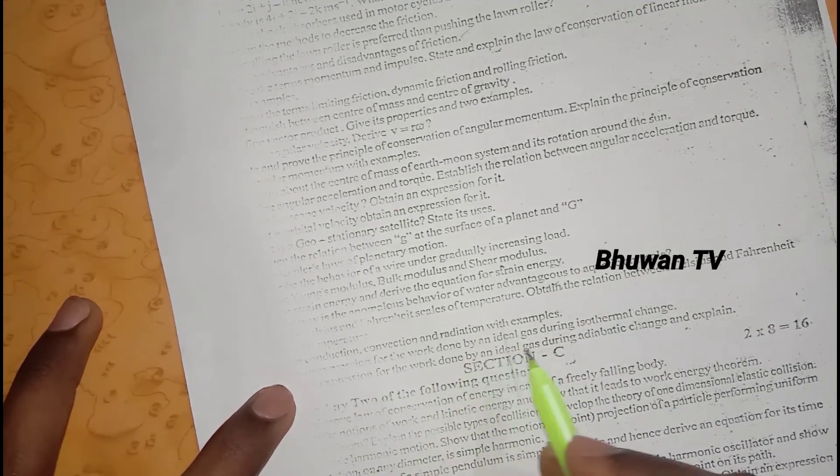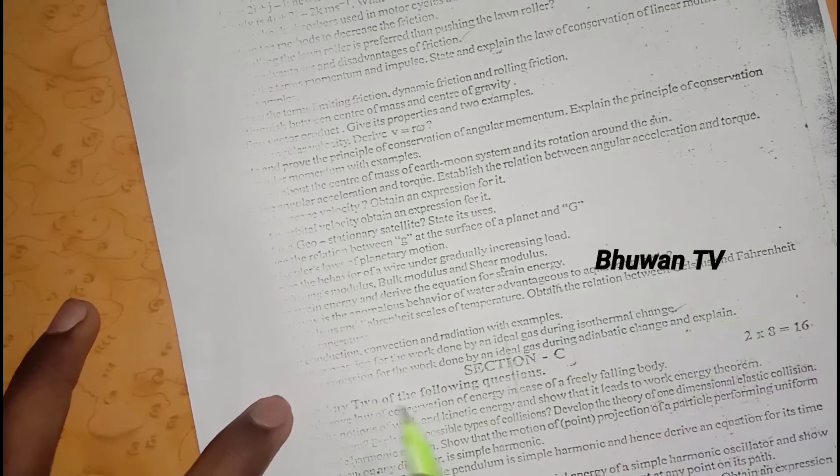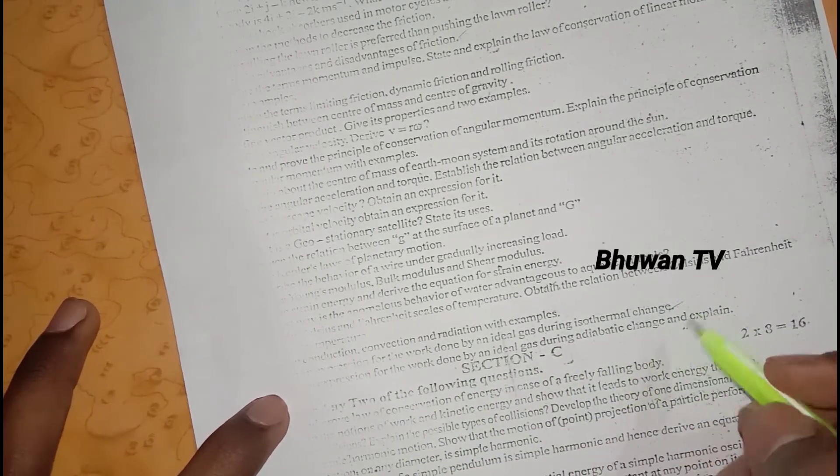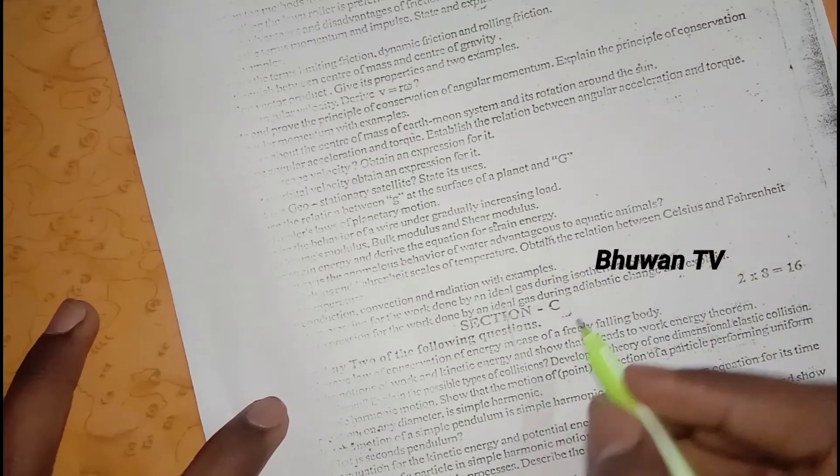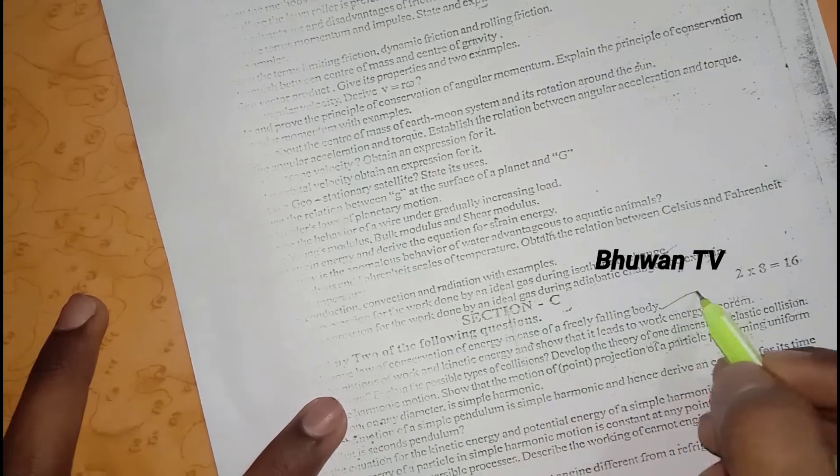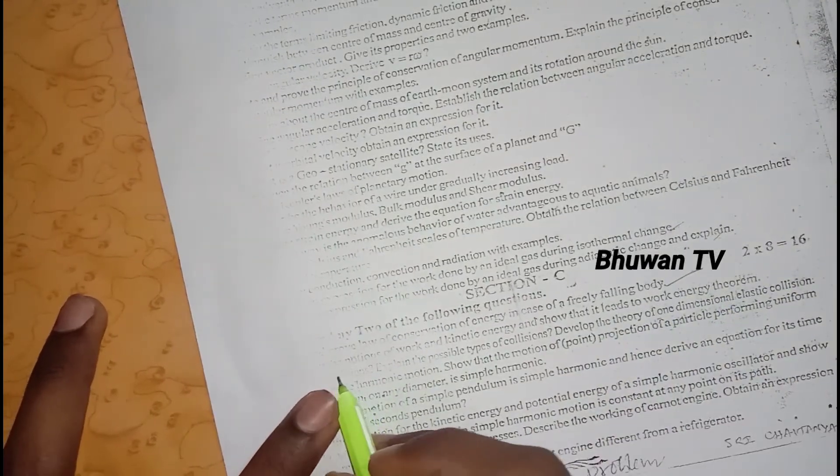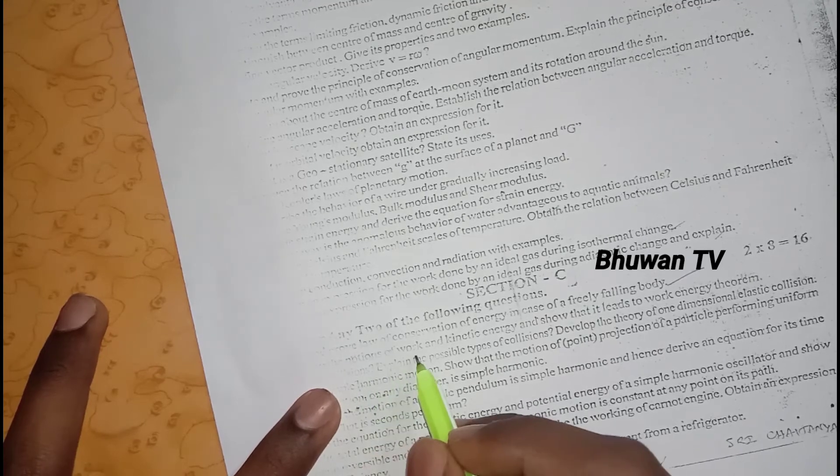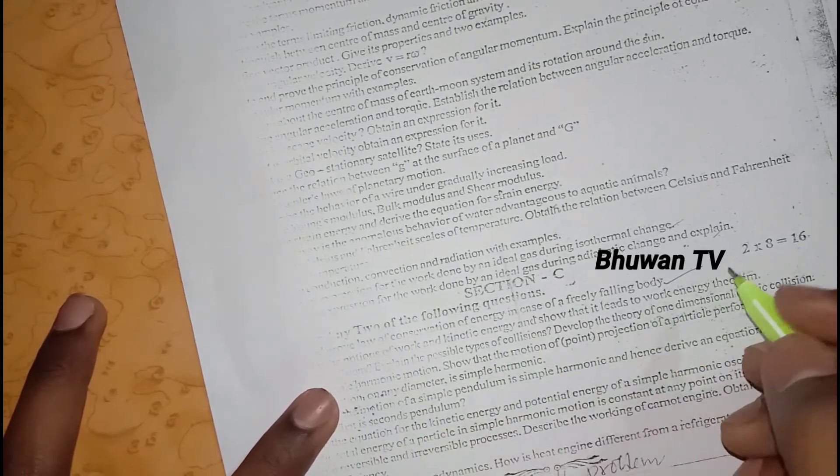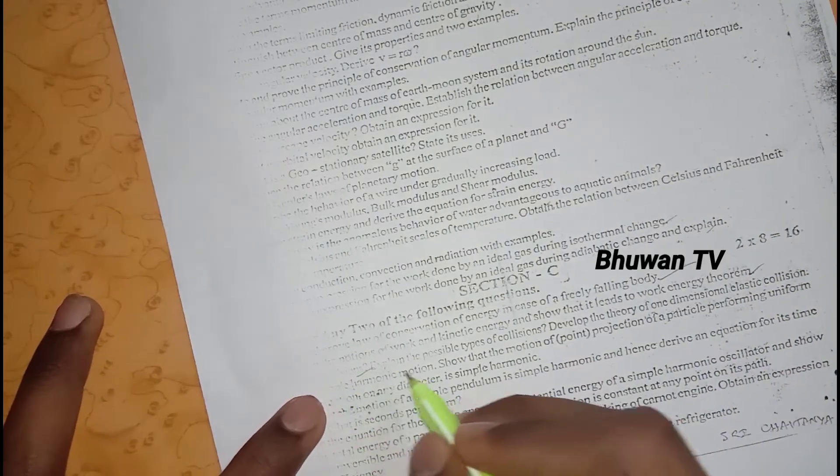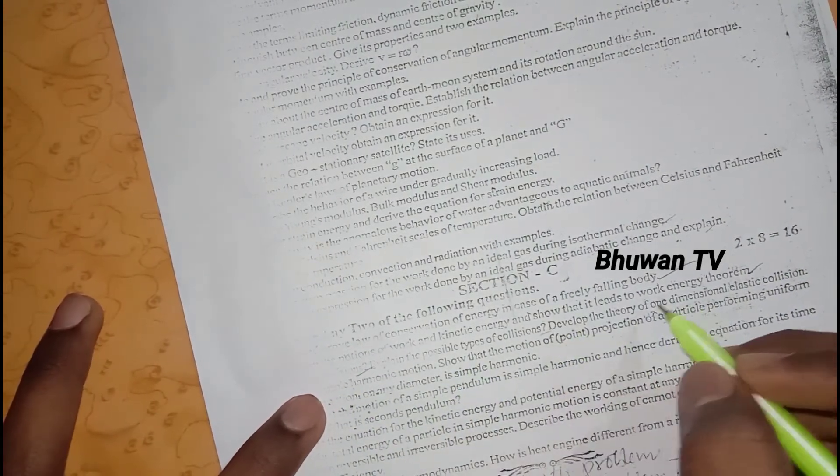Derive expression for the work done by an ideal gas during an isothermal change. Expression for the work done by ideal gas during adiabatic change. State and prove law of conservation of energy in case of freely falling body, very important. State the notions of work and kinetic energy, show it leads to work-energy theorem. Collisions, possible types of collisions, develop the theory.